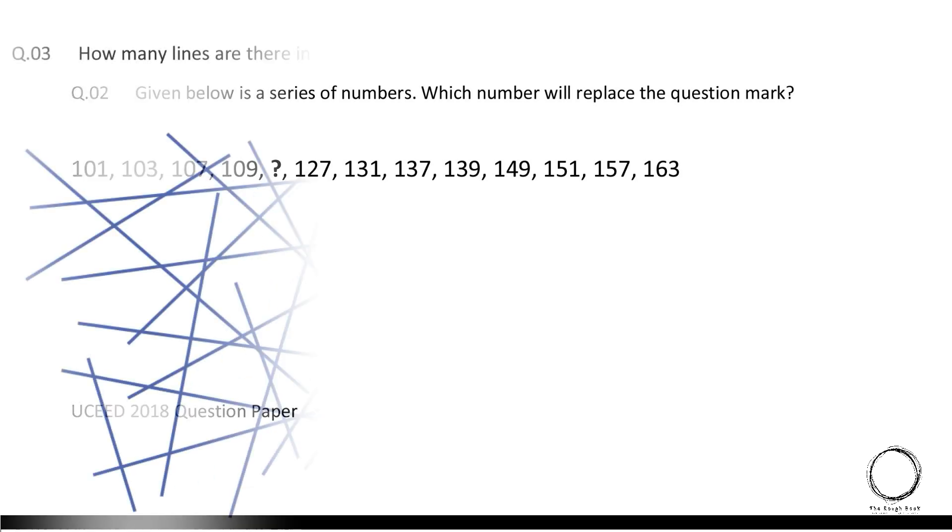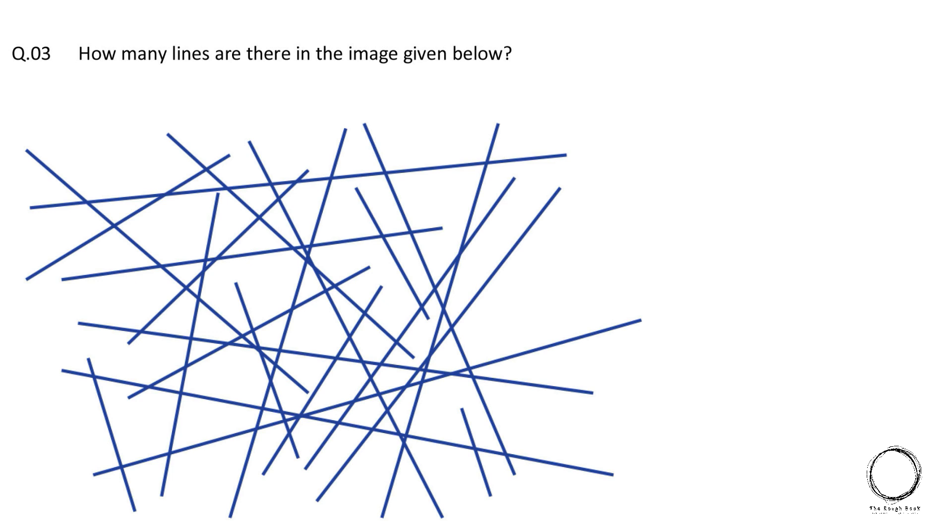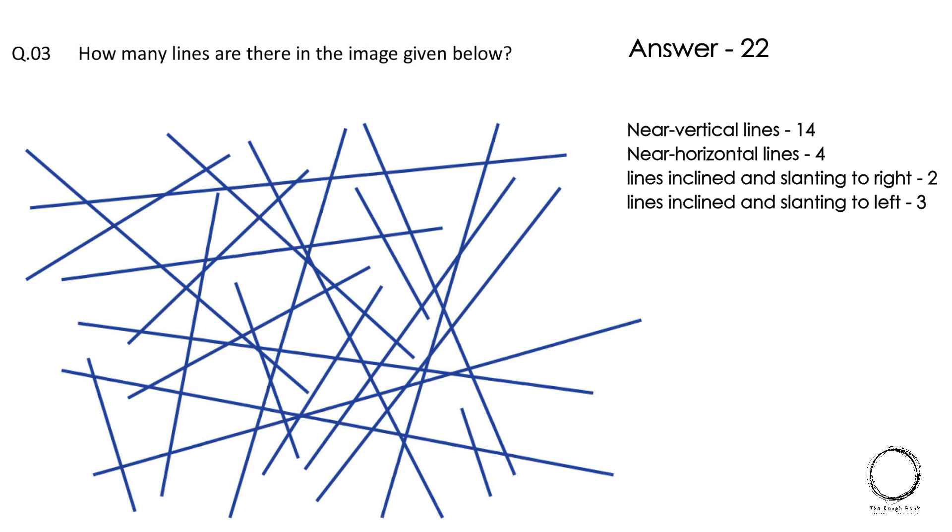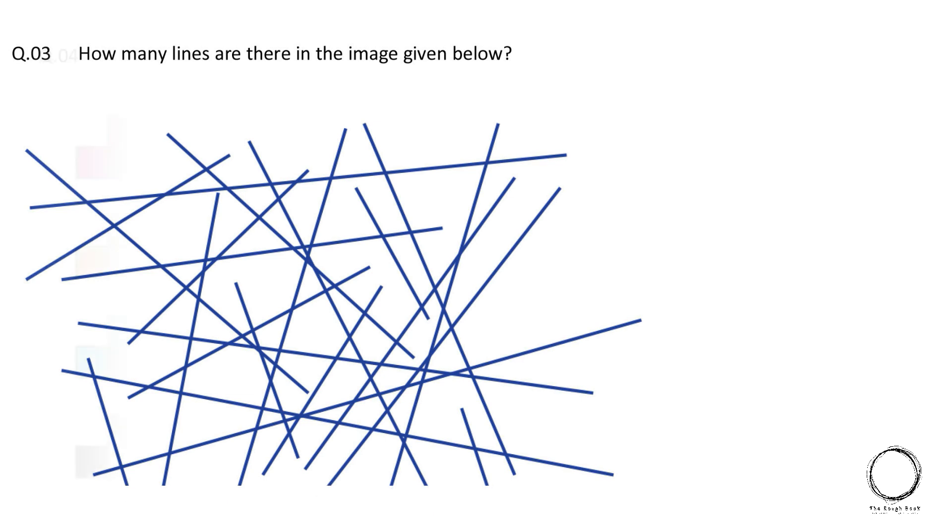Next, how many lines are there in the image given below? So starting with near-vertical lines, those are 14. Near to horizontal lines are 4. Lines inclined and slanting to right are 2. Lines inclined and slanting to left are 3. Hence, the answer is 22. Always start with counting the vertical lines and the horizontal lines and then slanting lines and the diagonals.